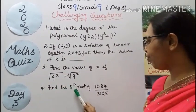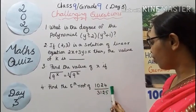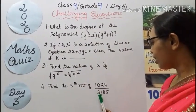Fourth question, find the 5th root of 1024 divided by 3125.